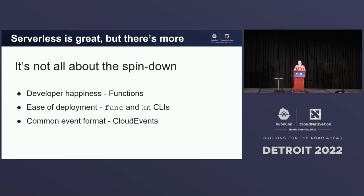I want to talk a little bit about what Knative brings to the table besides what everyone already knows about — scale to zero. It's also very much about developer happiness through the Knative Functions programming model and client tools. It's about ease of deployment using that same CLI as well as the Knative client CLI. And then finally, we've got this common event format called Cloud Events that ties everything together. It's that common thread that goes through the Knative serving, eventing, and functions modules — the building blocks. I think that these three things all come together to make Knative something greater than the sum of all these individual parts.